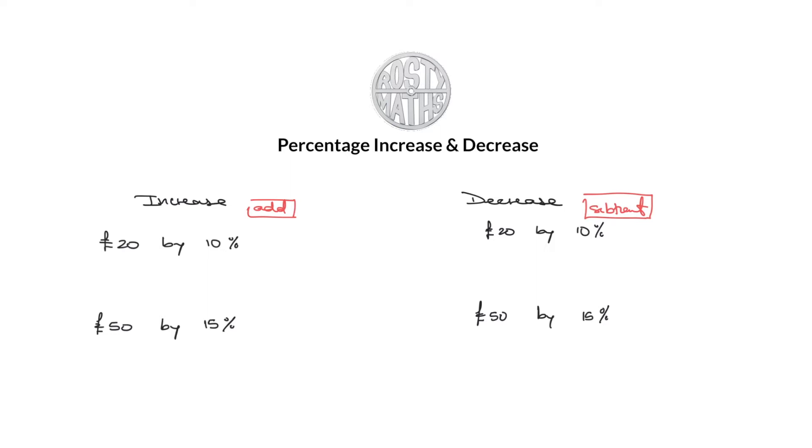All right cool. Let's go into doing a couple of questions here. So I've got £20 and I want to increase it by 10%. The first thing I will need to do is to find what 10% of £20 is. So 10% is equal to 20 divided by 10 which is going to be £2.